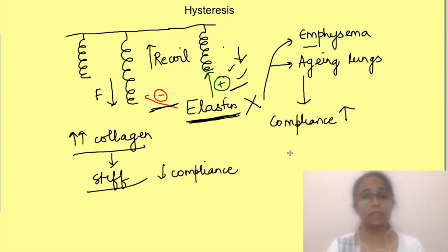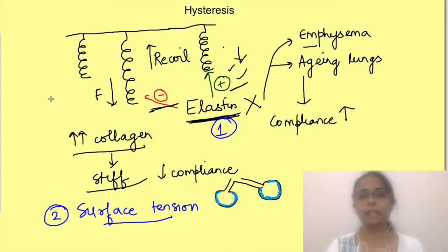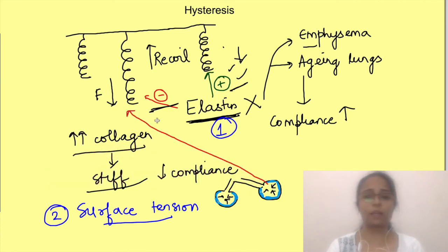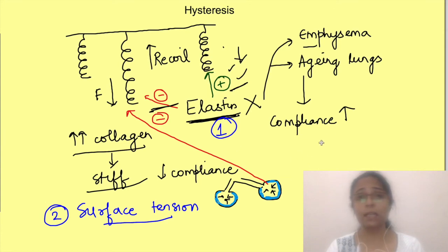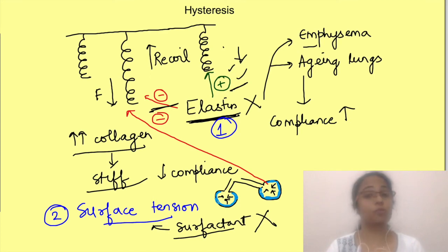Another factor affecting lung compliance is surface tension. All alveoli are lined by a thin layer of fluid secreted by their lining epithelium. Due to the natural cohesive property of fluid, the molecules pull together, tending to collapse the alveoli and opposing lung expansion. So two forces oppose lung expansion: elasticity and surface tension. This surface tension is counteracted by surfactant secreted by type 2 alveolar cells, which decreases the cohesive force between molecules and hence reduces surface tension. Without surfactant, lung expansion would be severely impaired with extreme tendency to recoil.